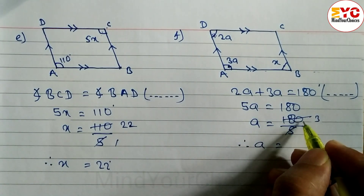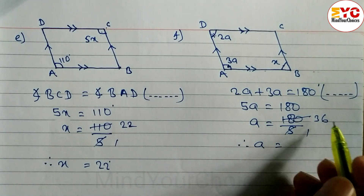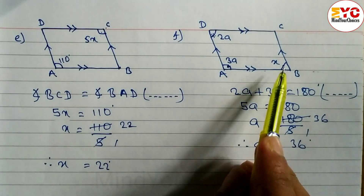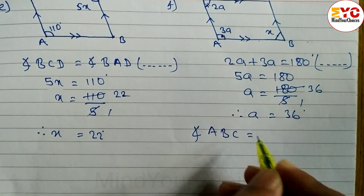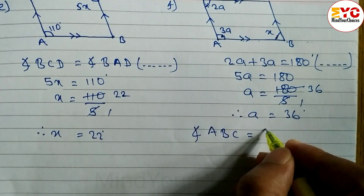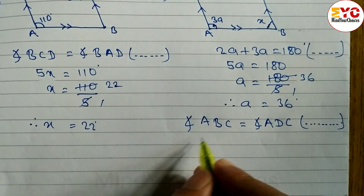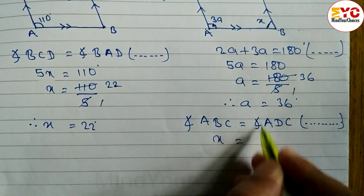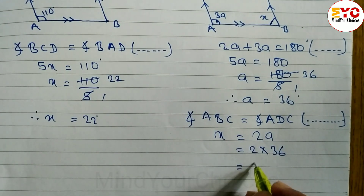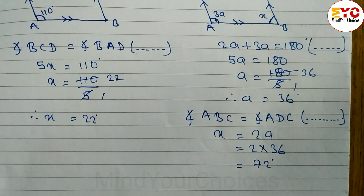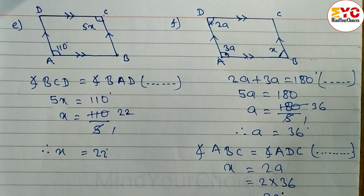Since 5a equals 180, we divide 180 by 5 and therefore a is equal to 36 degrees. Now we find the value of x. Angle ABC is equal to angle ADC because opposite angles of a parallelogram are equal. ABC is equal to x and ADC is equal to 2a. Putting the value of a: 2 times 36 equals 72. So the value of x is equal to 72 degrees.